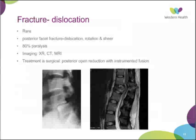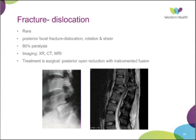The last fracture type is fracture dislocation. These are more rare — a posterior facet fracture dislocation due to rotation and shear force. Although rare, they should not be missed because they have high neurological compromise — about 80% can have paralysis. Full workup with x-ray, CT, and MRI should be performed. Treatment is always surgical because they are highly unstable, generally involving open reduction and instrumented fusion. On MRI, you can see compromise of the cord. Sometimes it can be subtle, so always perform MRI to assess the posterior ligamentous complex.